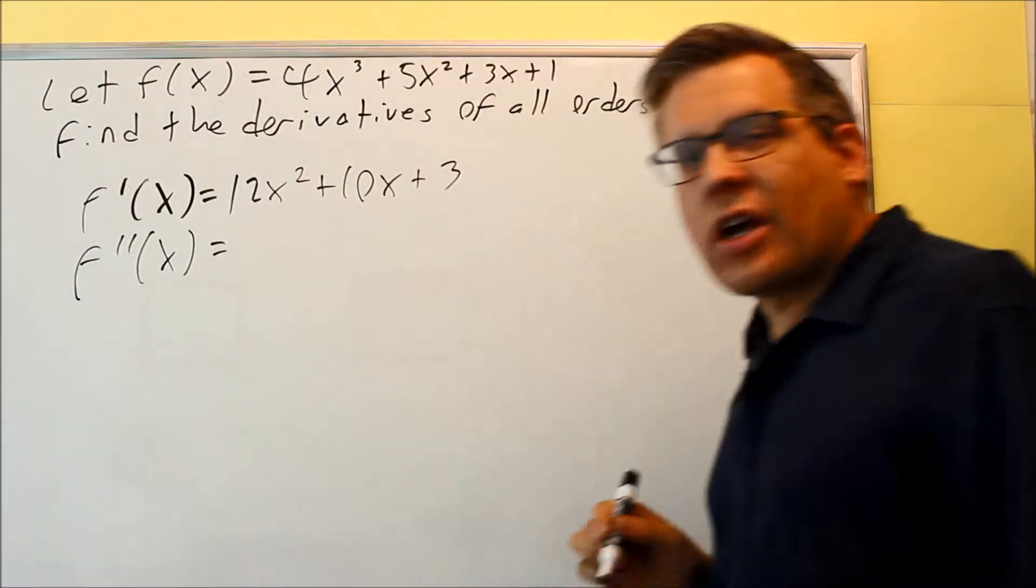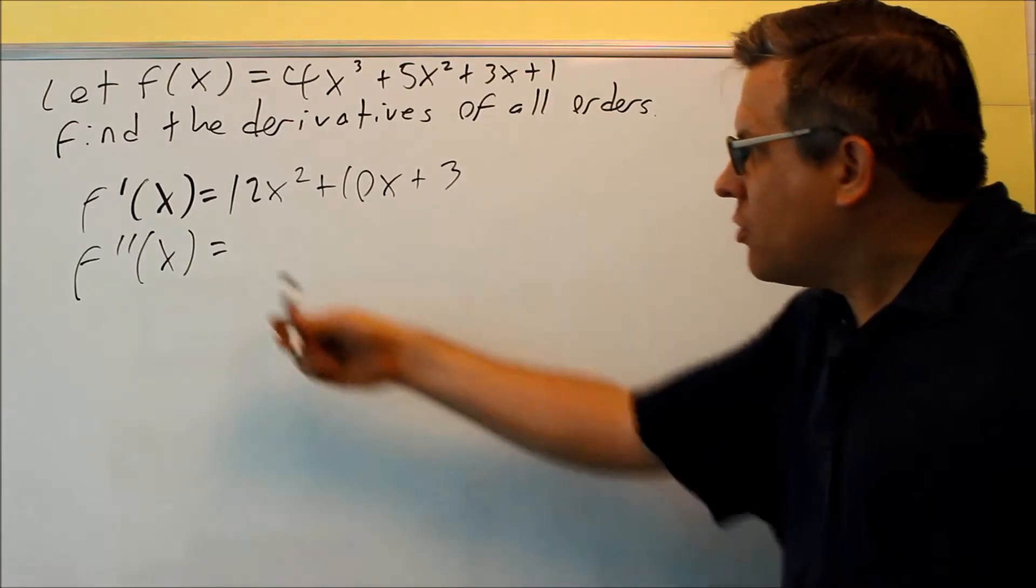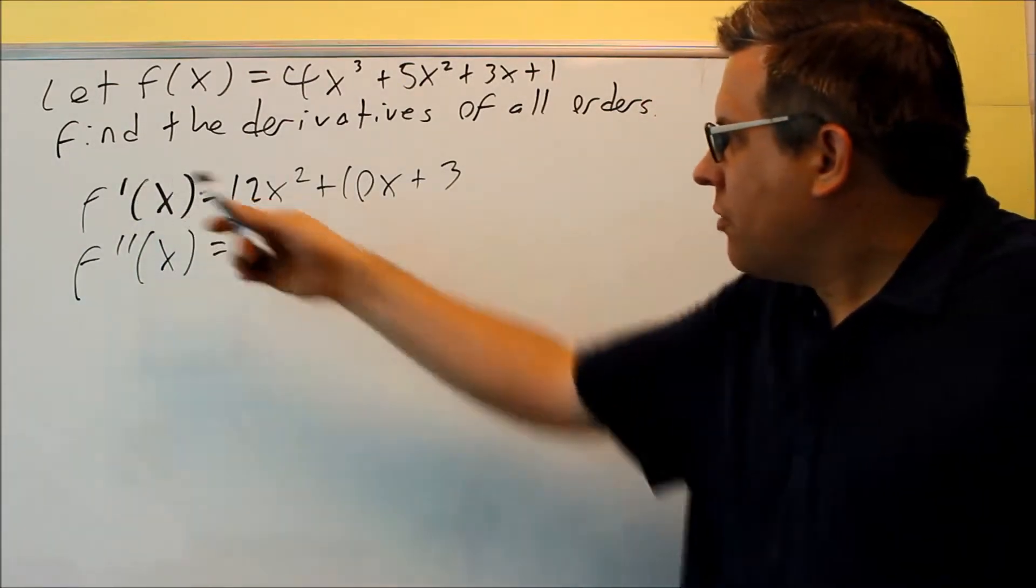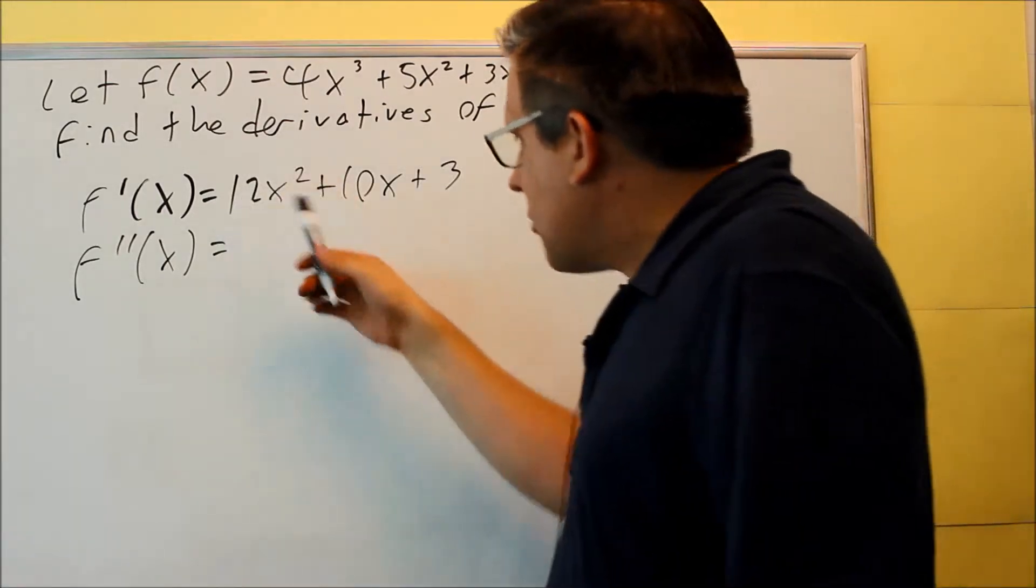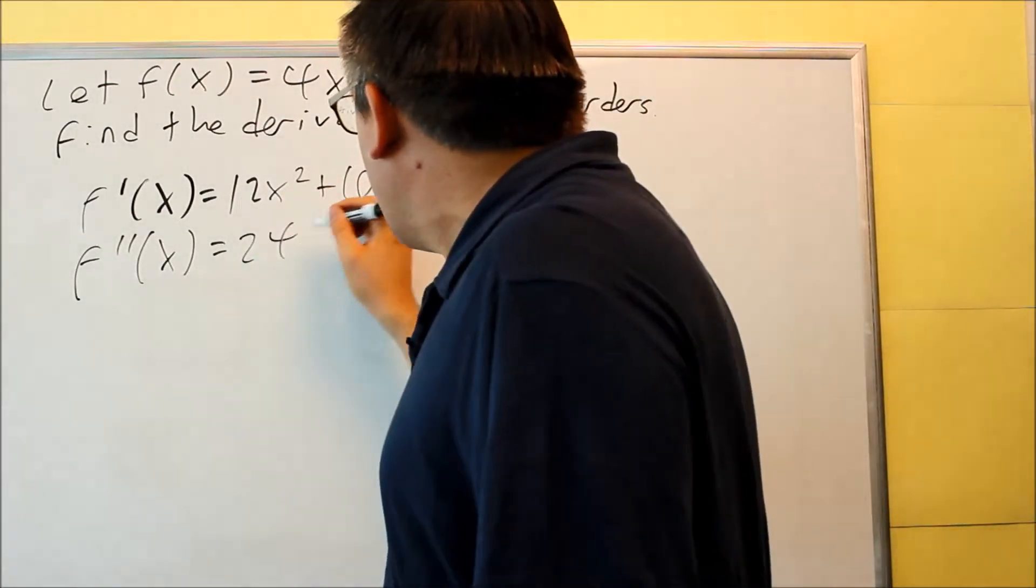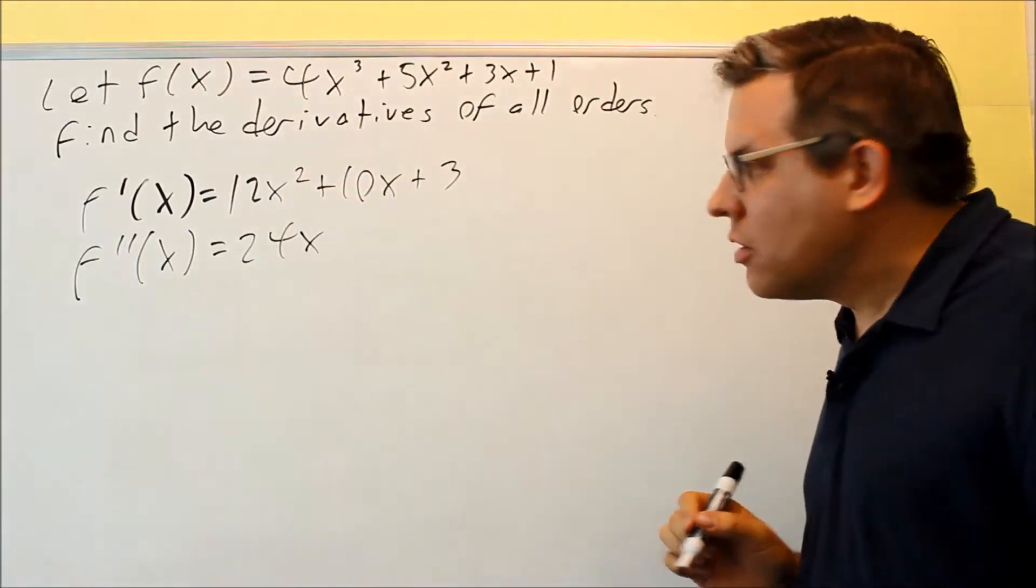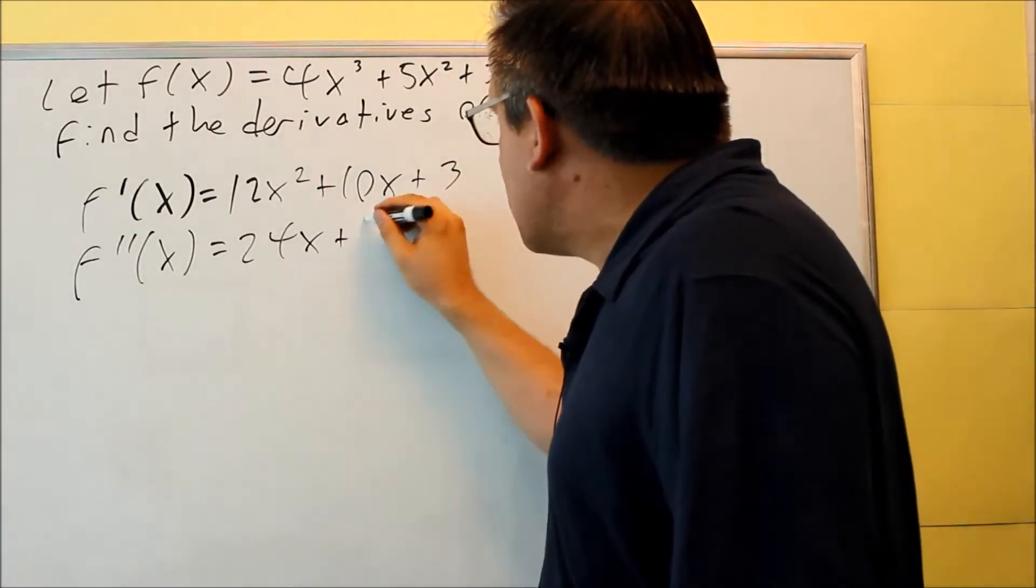Let's now find the second derivative. The second derivative would be the derivative of this one. So we're just going to take the derivative of our answer. 2 comes down, multiplied by 12, 24x to the first power. This is 10 times x.